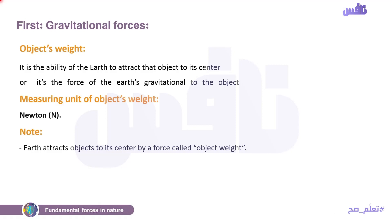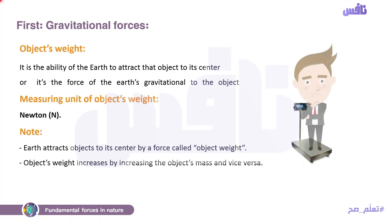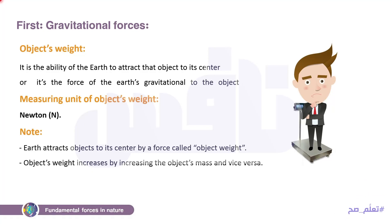الweight بيتغير من place to place. يبقى هنا الweight varied according to the gravitational force of the planet. وكمان: objects' weight increases by increasing the object's mass and vice versa. يعني الweight depends on the object's mass. كل ما الobject ده الماس بتاعته كبيرة كل ما الweight بتاعته كبيرة، and vice versa.